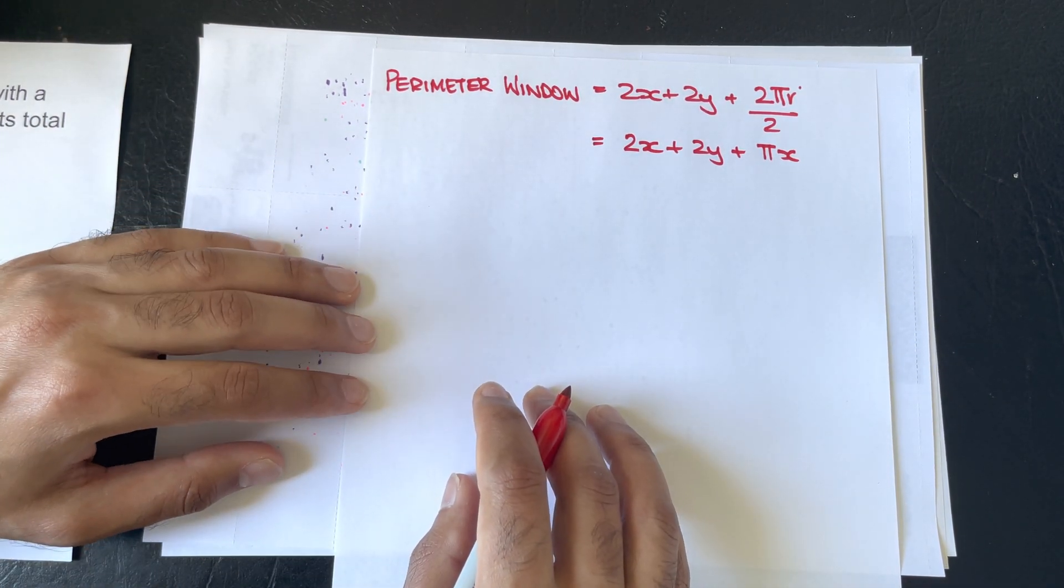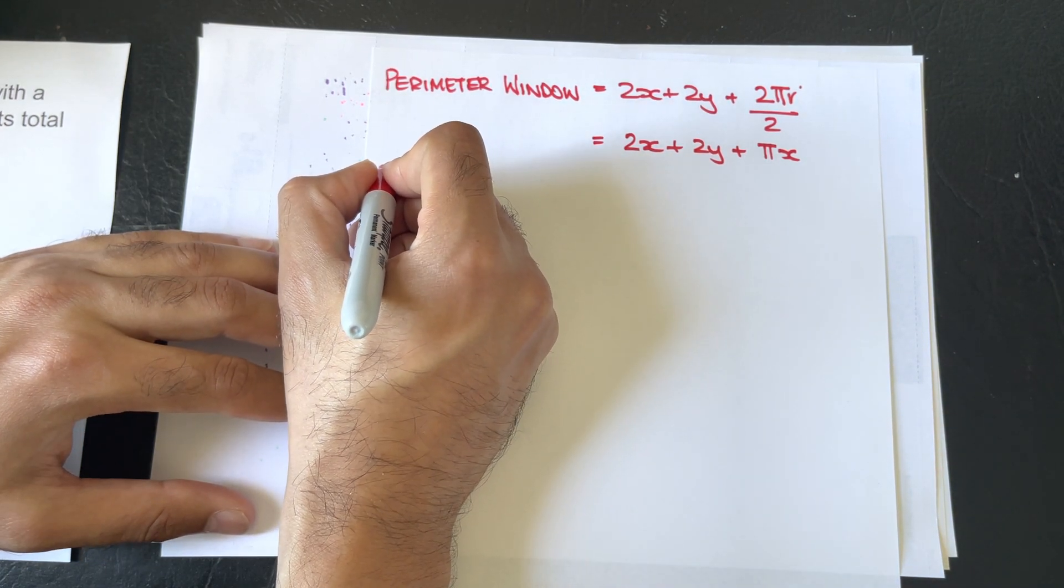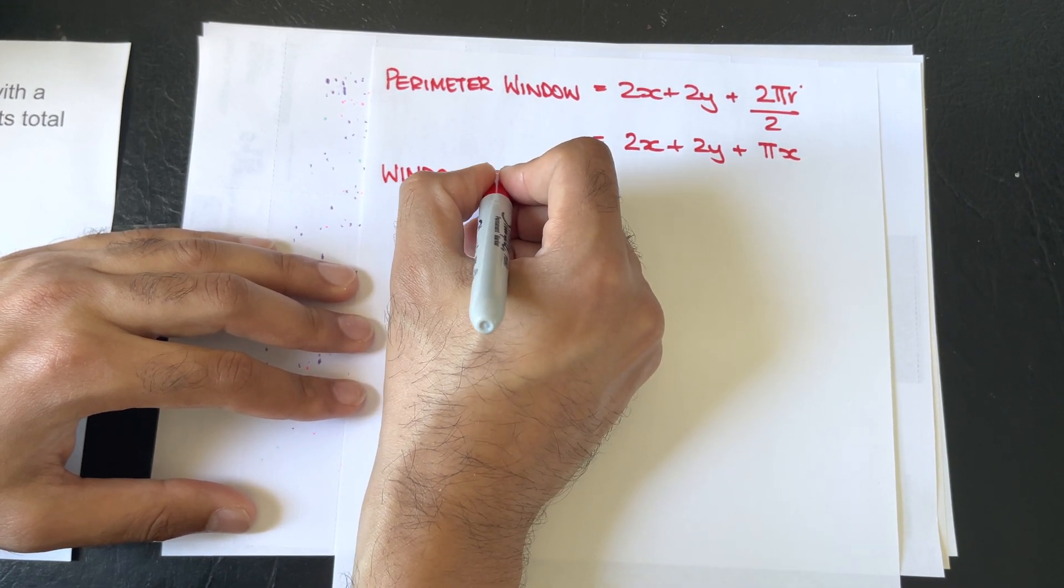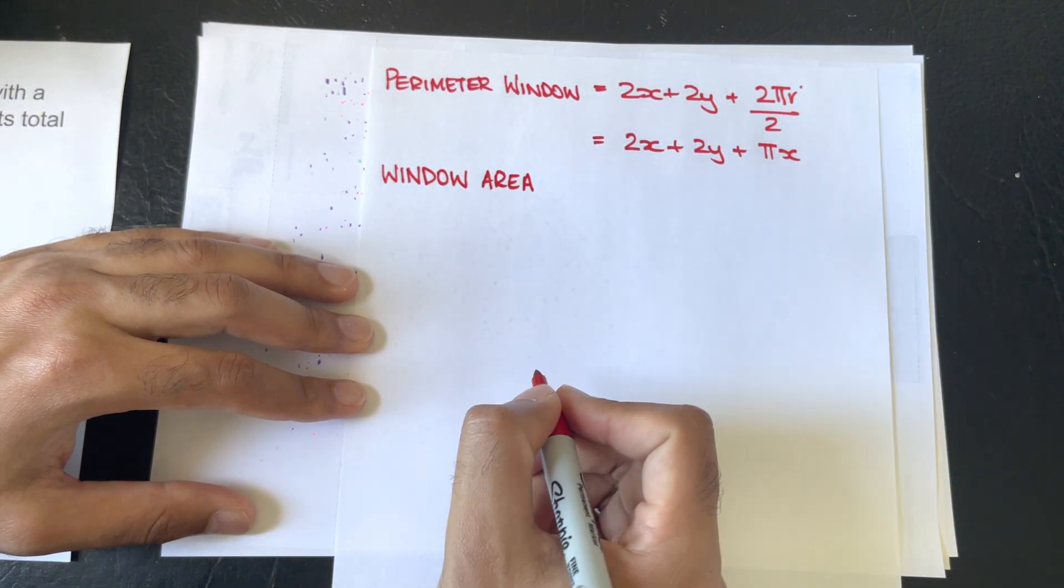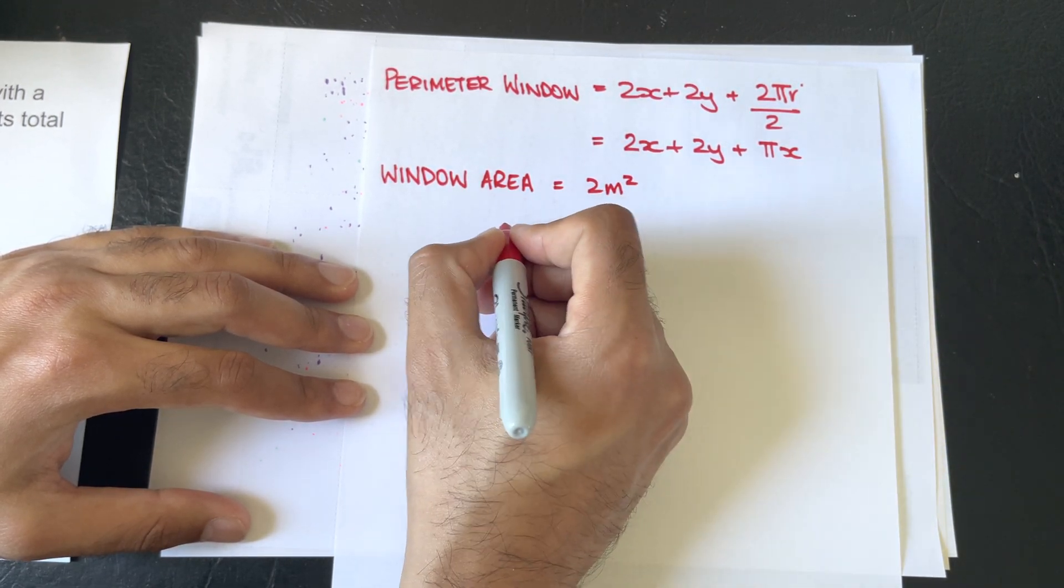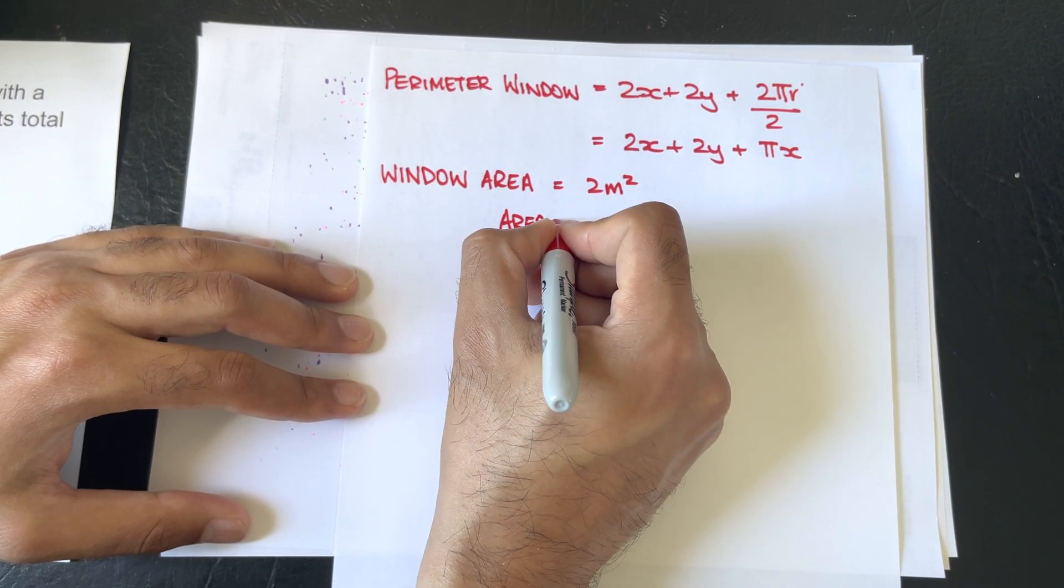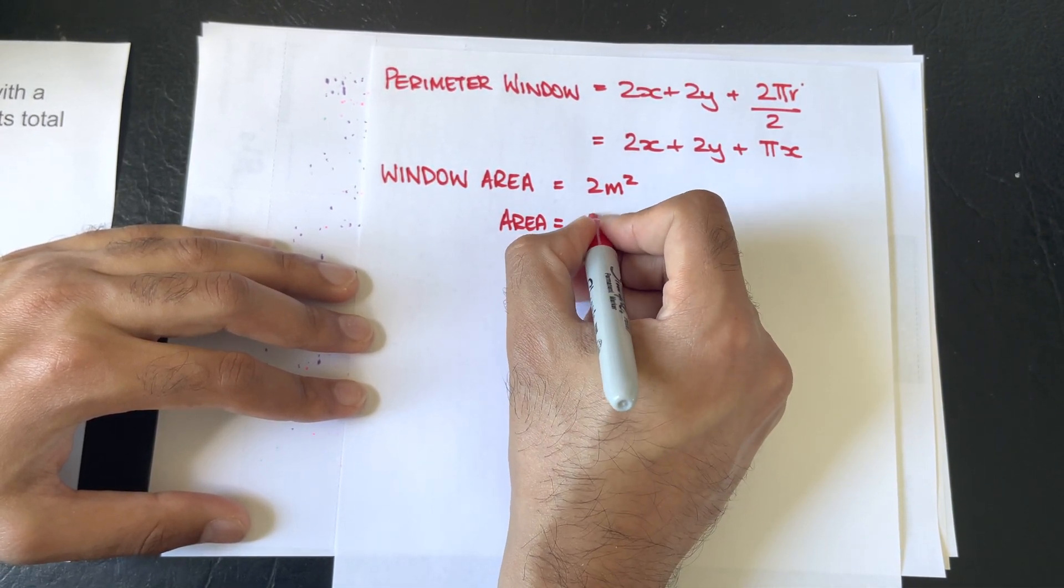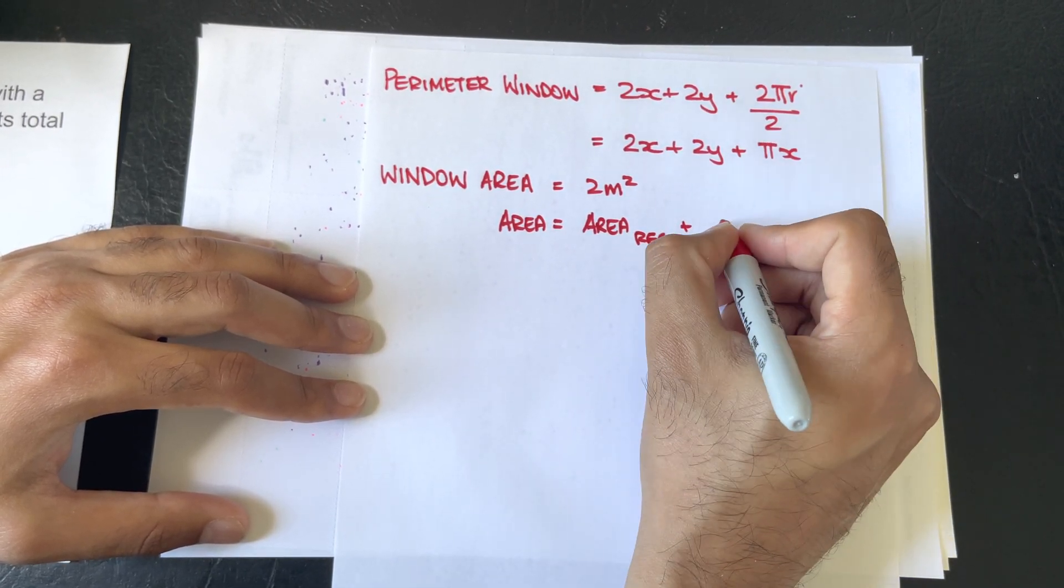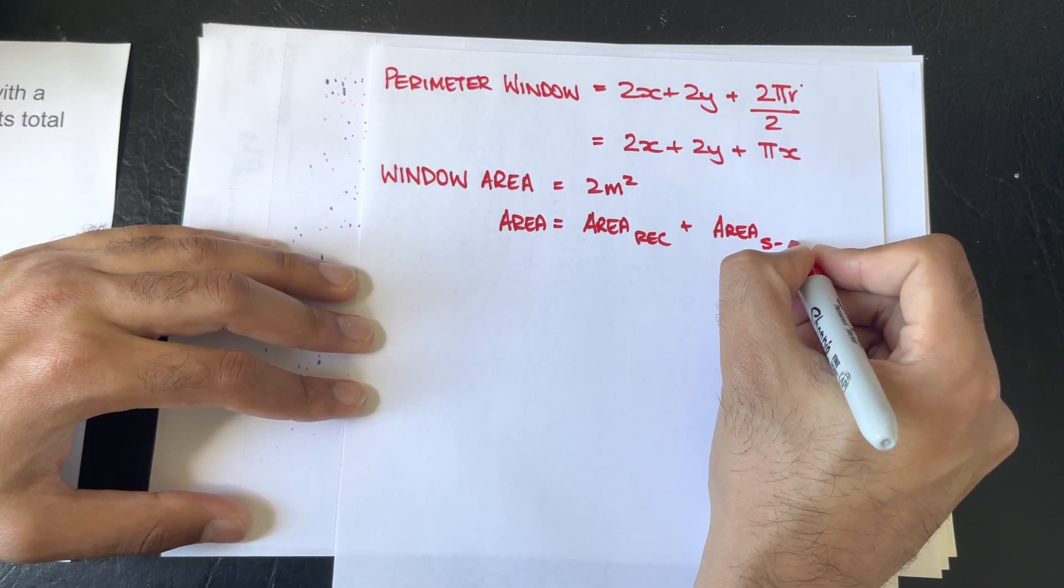Now, our third step is to work with the constraint, and we've been given an area. So, window area equals 2 meters squared, and the area is a composite shape of area of rectangle plus area of semicircle.